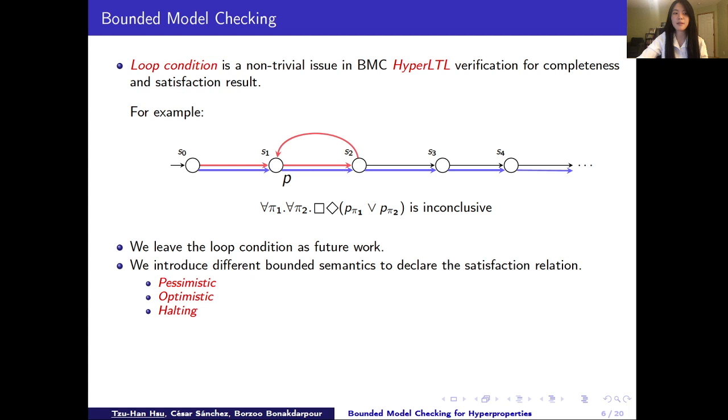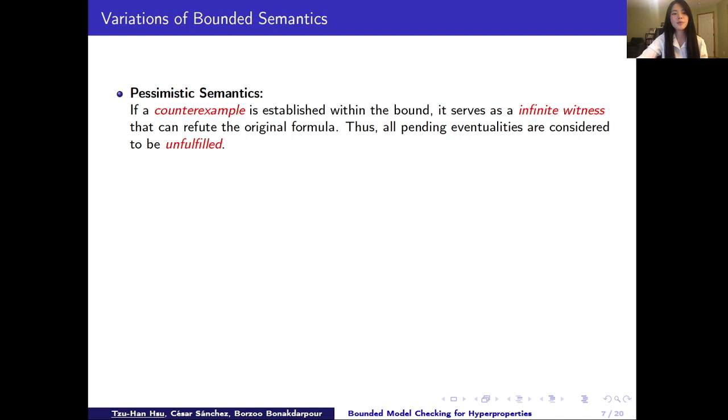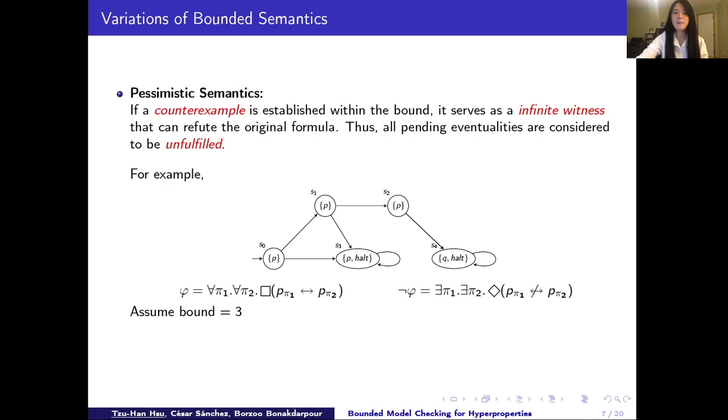So now we introduce different semantics to correctly interpret the model checking results from bounded observations. The first semantics we have is called pessimistic semantics. In pessimistic, if a counter example is found with some bound k, we consider all future events as unfulfillable as well. For example, if we want to verify the hyperLTL formula for all for all pair of traces p if and only if p on this model, then the counter example would be a pair of traces that satisfy the negation of the original formula. Assume our bound for both traces is 3.